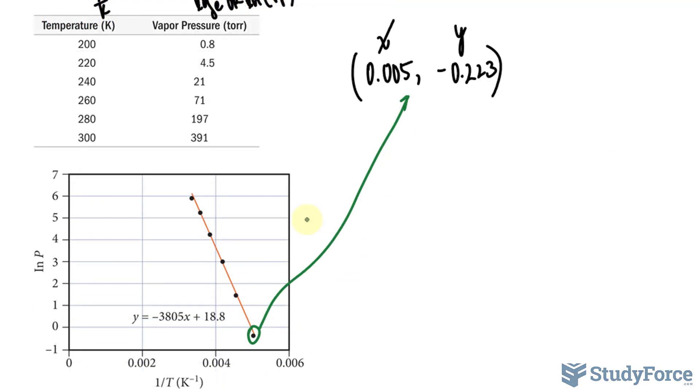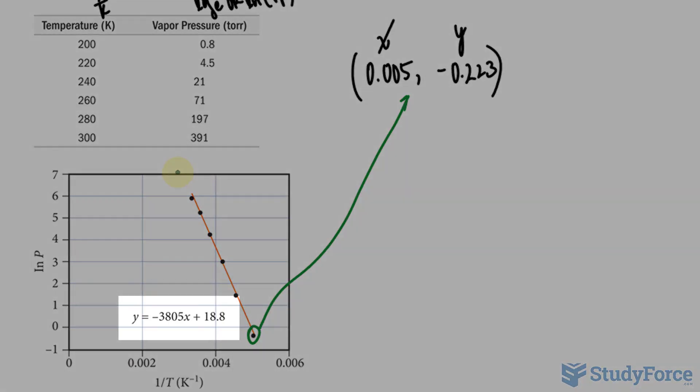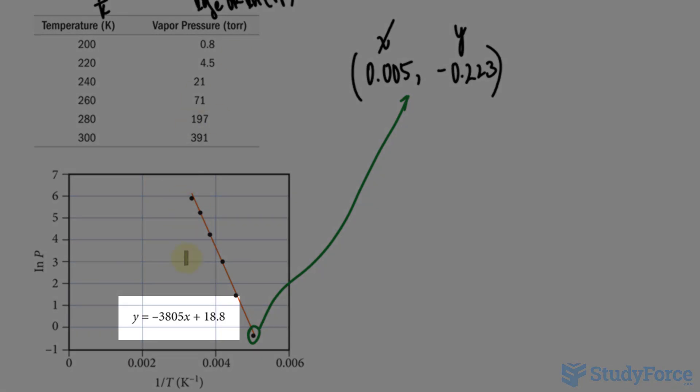One other observable feature is this line that's crossing through these points. This is referred to as the line of best fit, which Excel can easily add to show the relationship. And from the looks of it, the relationship between the two variables is linear. As a result, the equation of the line is also given.